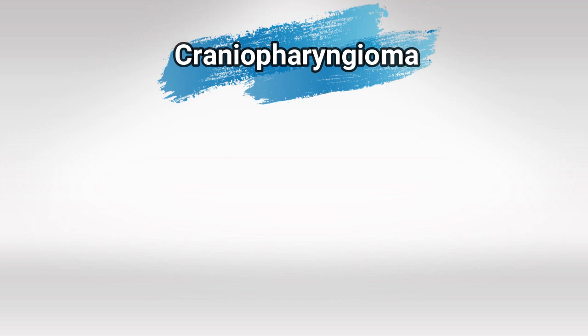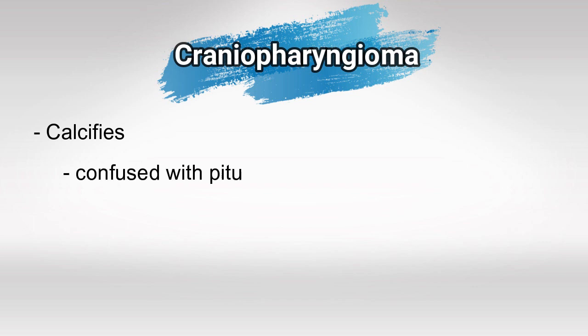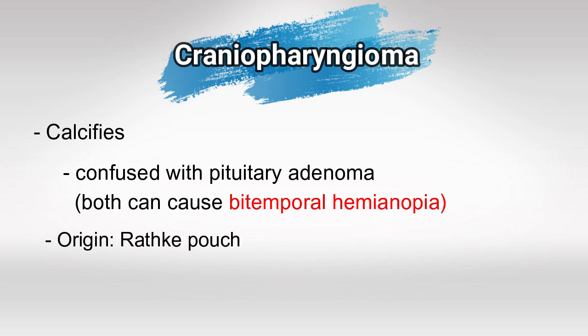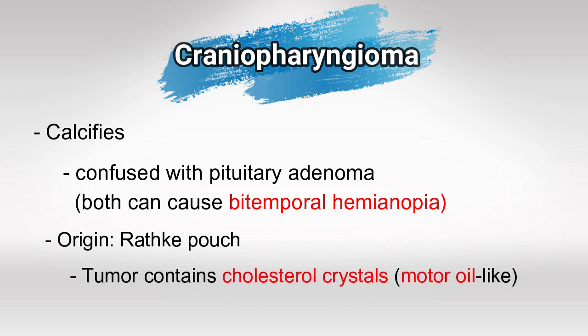Next we have craniopharyngiomas. Craniopharyngiomas can calcify, which is very important to know, and they're usually confused with pituitary adenomas because they both cause bitemporal hemianopia. Craniopharyngioma's origin is Rathke's pouch, and usually they contain cholesterol crystals which present as motor oil-like material — also very important to know.